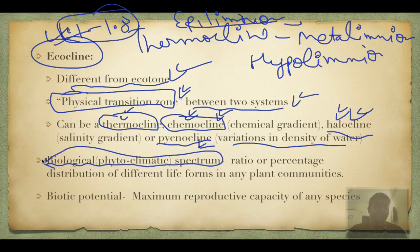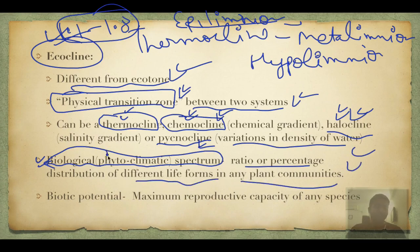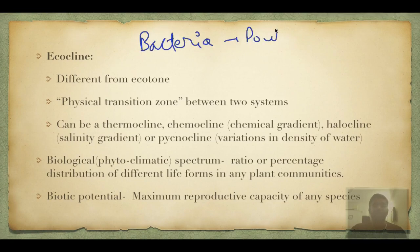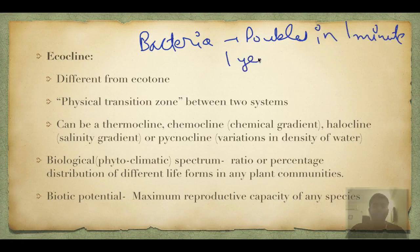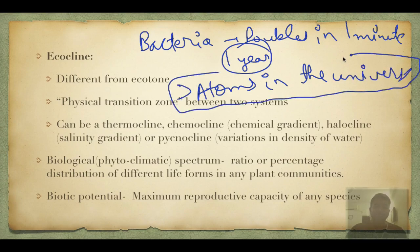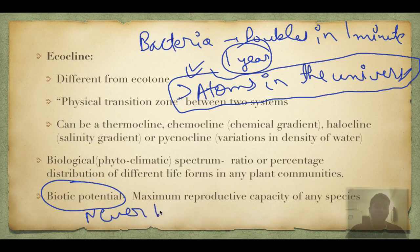Phytoclimatic spectrum is the ratio or percentage of different life forms in any plant community — phyto means plants. Biotic potential is the maximum reproductive capacity of any species. For example, if a single bacterium doubles every minute, by the end of a year the number of bacteria would be more than the number of atoms in the universe. That is why biotic potential can never be realized — it is always constrained by limited resources and competition from other species.